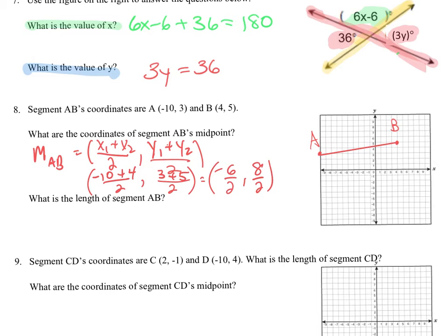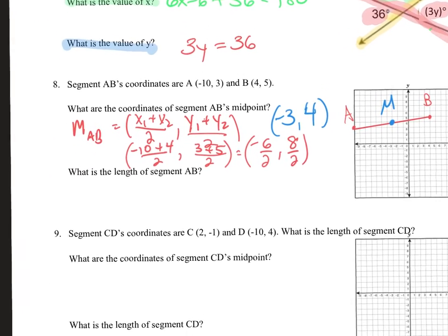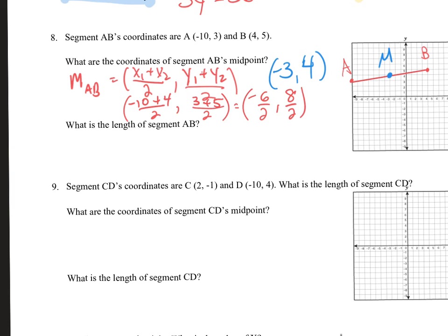Negative 10 plus 4 is negative 6, and 3 plus 5 is 8. Divided by 2: negative 6 divided by 2 is negative 3, and 8 divided by 2 is 4. So the midpoint is negative 3 comma 4. Let's check on the graph — negative 3 comma 4 is right there. That looks like the midpoint.